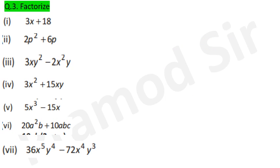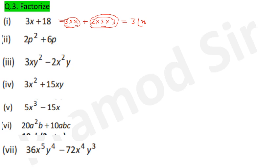Question 3 — factorize the following. For 3x + 18: write 3×x + 3×6. What is matching: only 3. When you remove 3 from the first term you get x, and from the second term you get 6. So the answer is 3(x + 6).